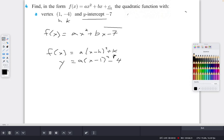And then they also tell us that we have this y-intercept. We can do similar to what we did in the last question, where we know that the y is negative 7 and the x is 0 for that point.